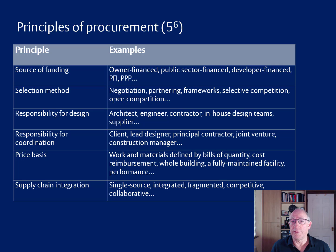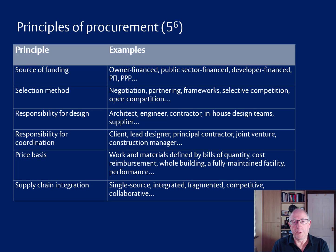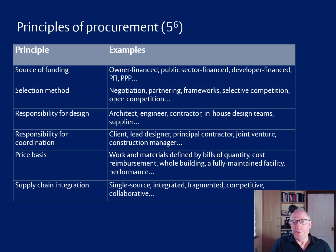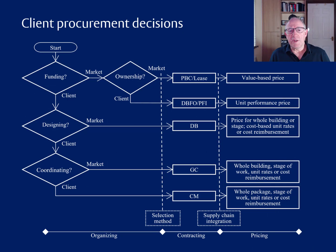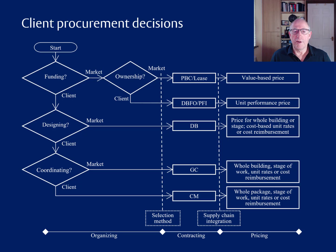My suggestion is that when looking at procurement methods and deciding how to procure a project, we really need to begin with the client's requirements. This is the approach adopted in British Standard BS 8534:2011, and we're currently working on folding this into ISO 10845 as well. It also leads to an interesting decision-making process, because if you start from the point of view of the client, this graphic provides a very simple route through a really complicated decision-making process.